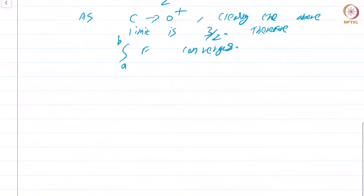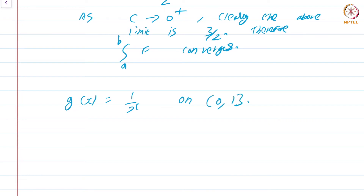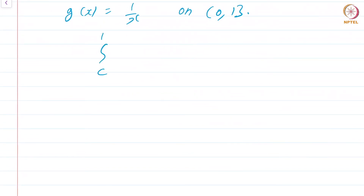Now let us see an example where the improper integral diverges. Take g(x) = 1/x, defined on (0, 1]. Just judging from the graph you would think this improper integral does not exist, but let us check rigorously. We compute the integral from C to 1 of 1/x dx, which from elementary calculus is log 1 − log C, and since log 1 = 0, this is just −log C.